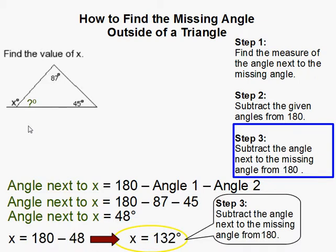That completes our problem. Now, there is an easier way to do it, and it's actually faster, but it's a little less intuitive. So, if you notice, this 132 degrees is in fact the same as this plus this.